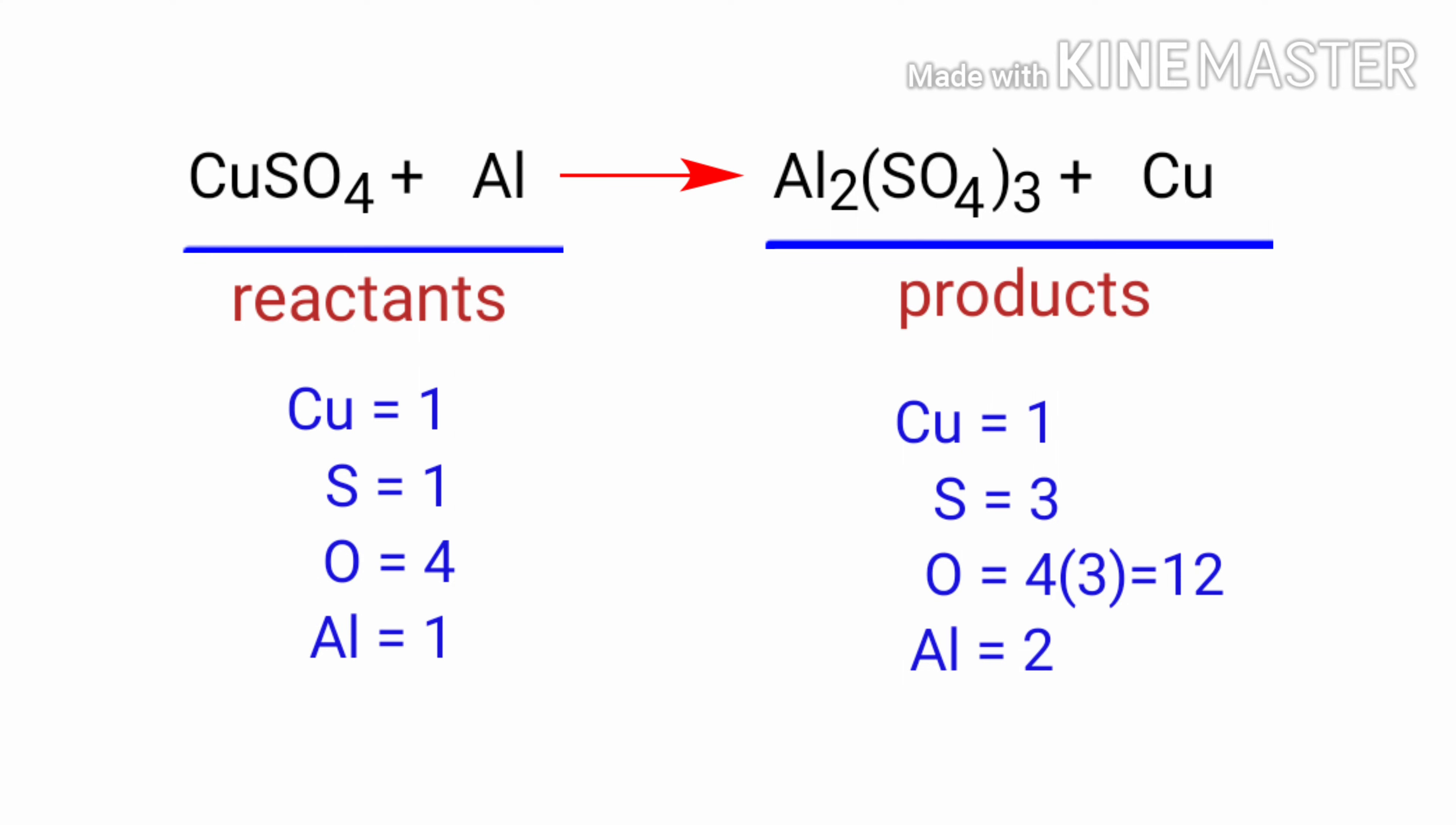In this equation, we need to balance the sulfur atoms first. To do this, we need to put a coefficient of 3 in front of CuSO4.